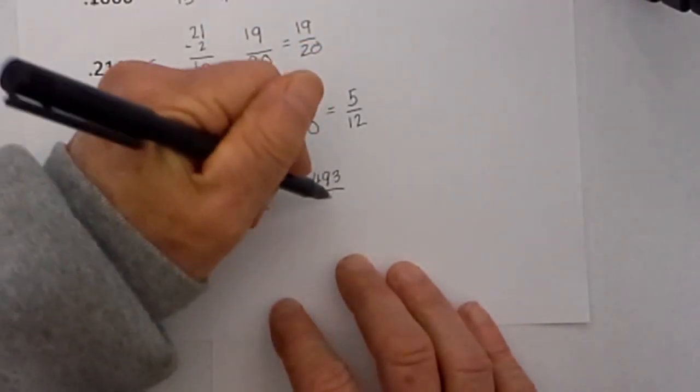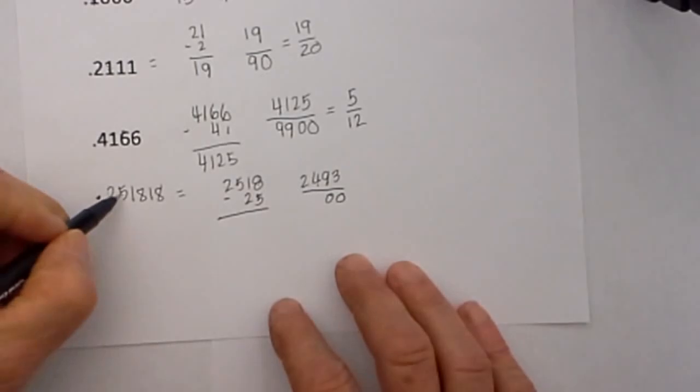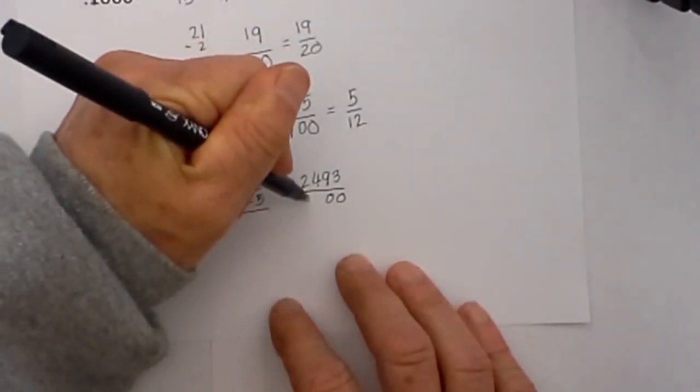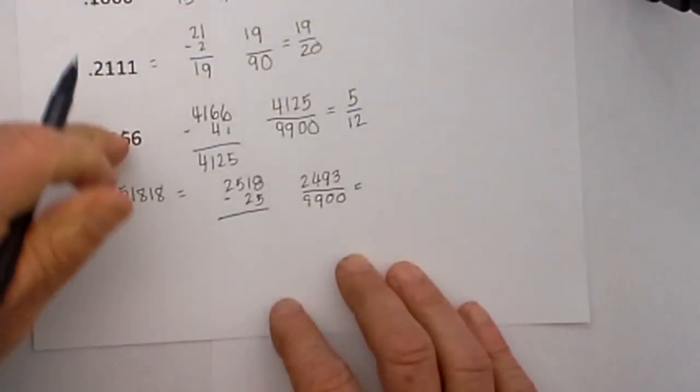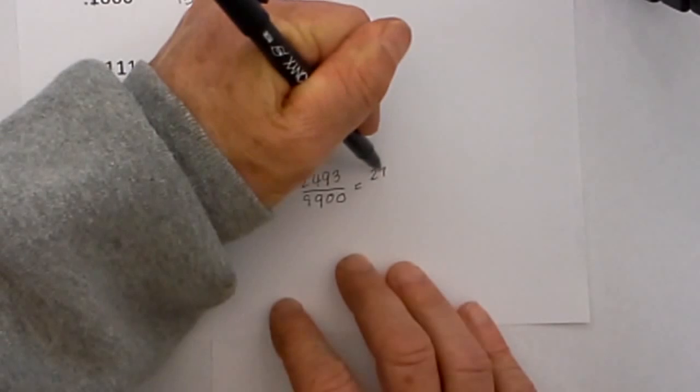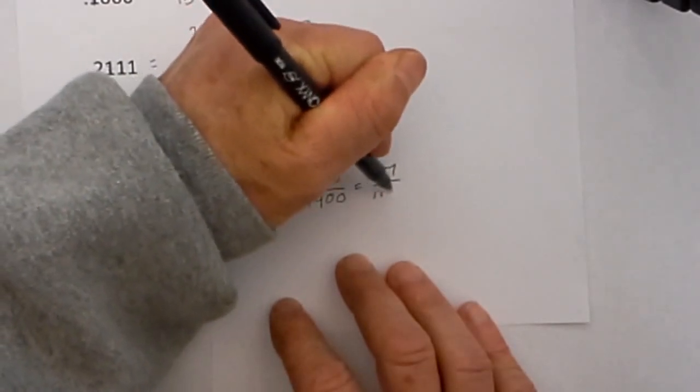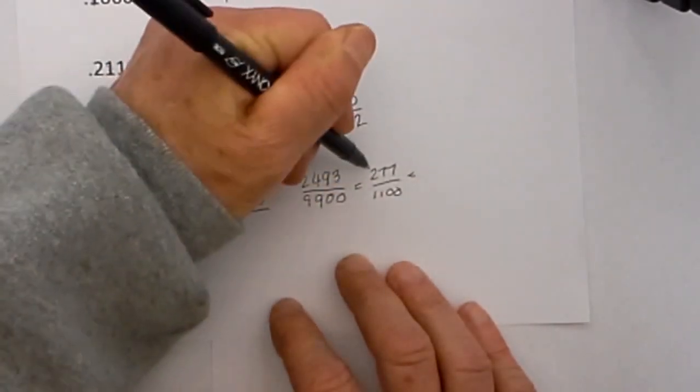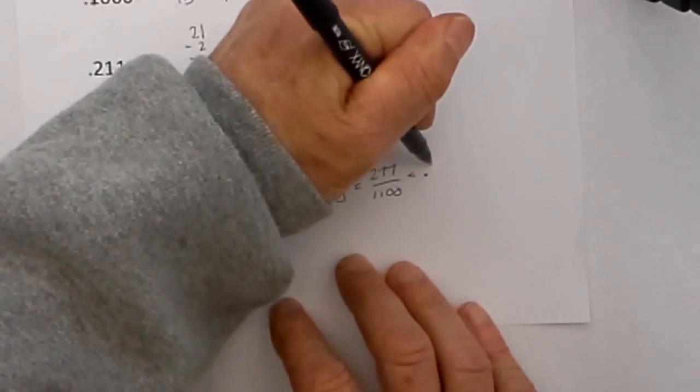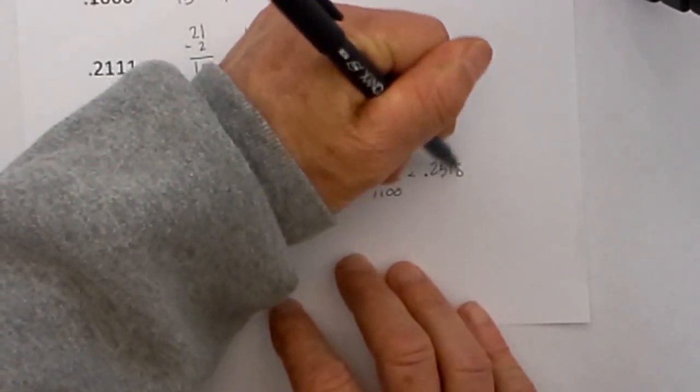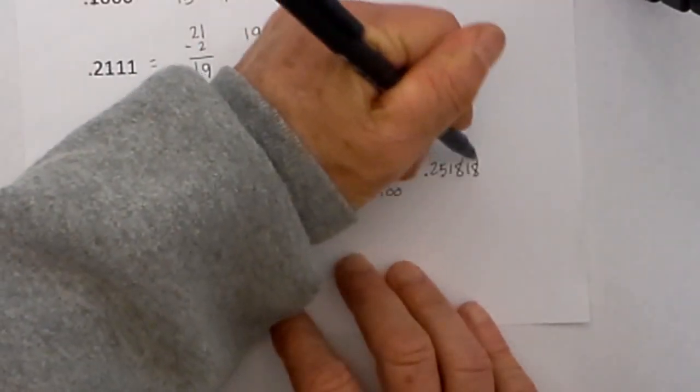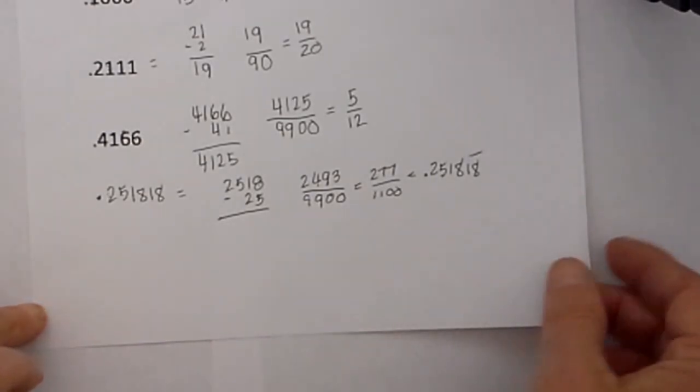And 2518 minus 25 is equal to 2493. And then the rules are you have two non-repeating which is 00 and then two repeating numbers which is 99 and you can reduce that down to 277 over 11. And then if I divide 277 by 11 lo and behold that equals .251818 repeating.